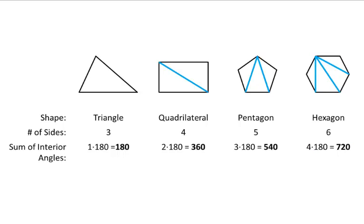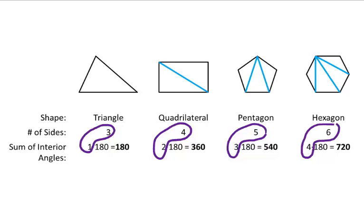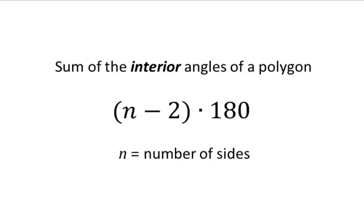So, now, let's take a look and see if we can find a pattern. If we have a shape with three sides, there is 1 times 180 degrees. A shape with 4 sides has 2 triangles. A shape with 5 sides has 3 triangles. And a shape with 6 sides has 4 triangles. So, if you look at the difference between each of these, they all differ by 2. 3 minus 2 is 1, 4 minus 2 is 2, 5 minus 2 is 3, and 6 minus 2 is 4. So, we have a formula that we can use to find the sum of the interior angles of any polygon. And that's (n - 2) times 180. And any time you see an n, it means the number of sides.